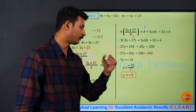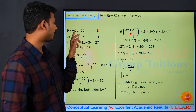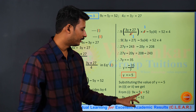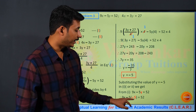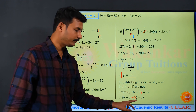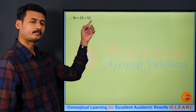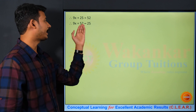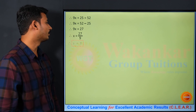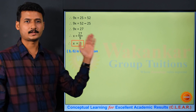Now we substitute y equals minus 5 into equation number 1: 9x minus 5 times (minus 5) equals 52. Minus times minus becomes plus, so 9x plus 25 equals 52. Transposing 25: 9x equals 52 minus 25 which is 27. So x equals 27 upon 9 which equals 3. We got both answers: x equals 3 and y equals minus 5. The solution is (3, minus 5).